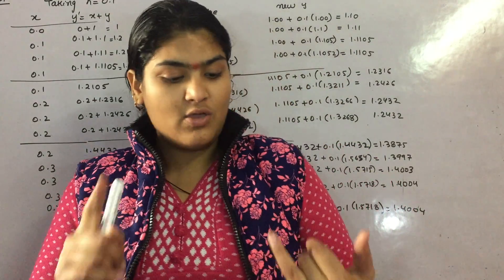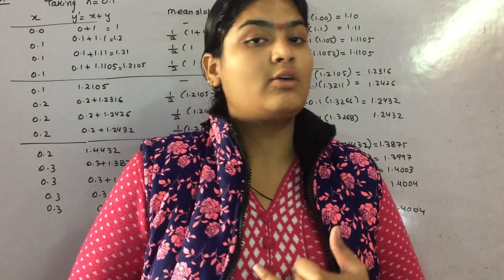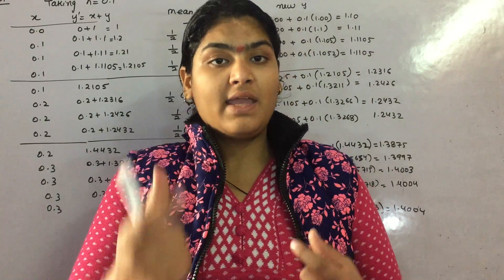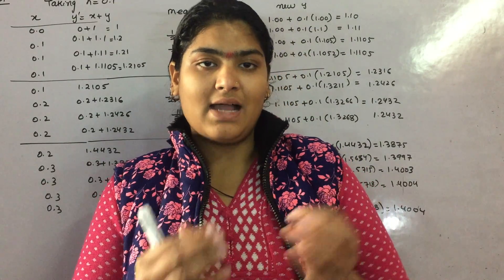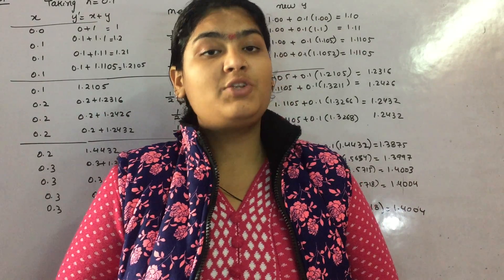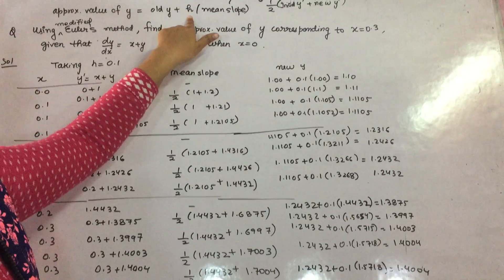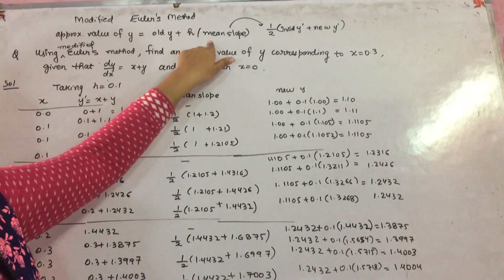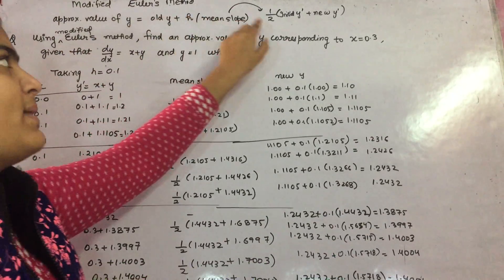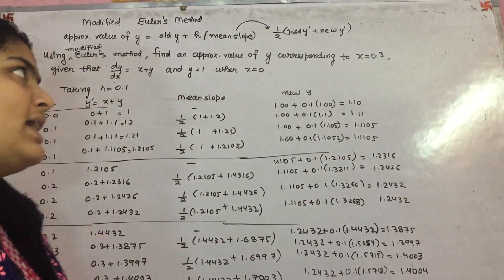How can you find out the mean slope? You have to take the column of x, the column of y, and the column of y-dash. The thing which is slightly different from Euler's Method is the new y, which comes out as the old y plus h multiplied by the mean slope. You find the mean slope by taking half of the initial y-dash plus the new y-dash.